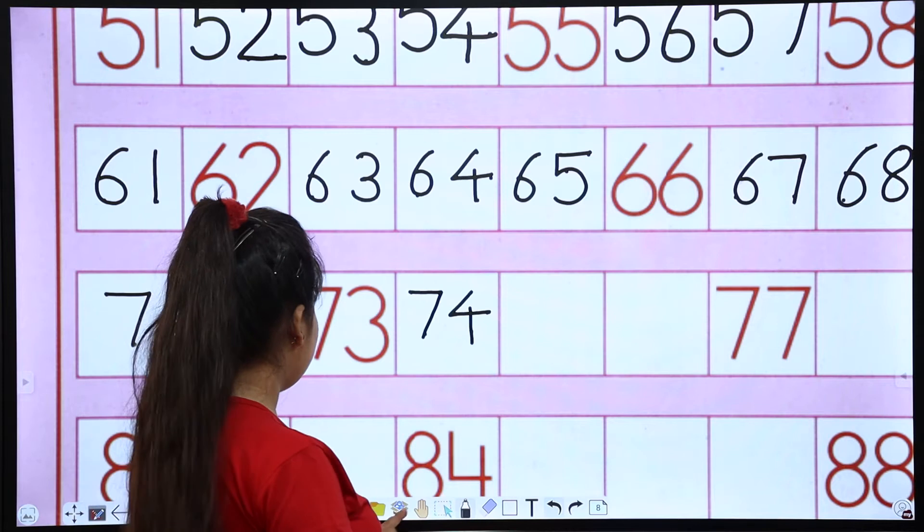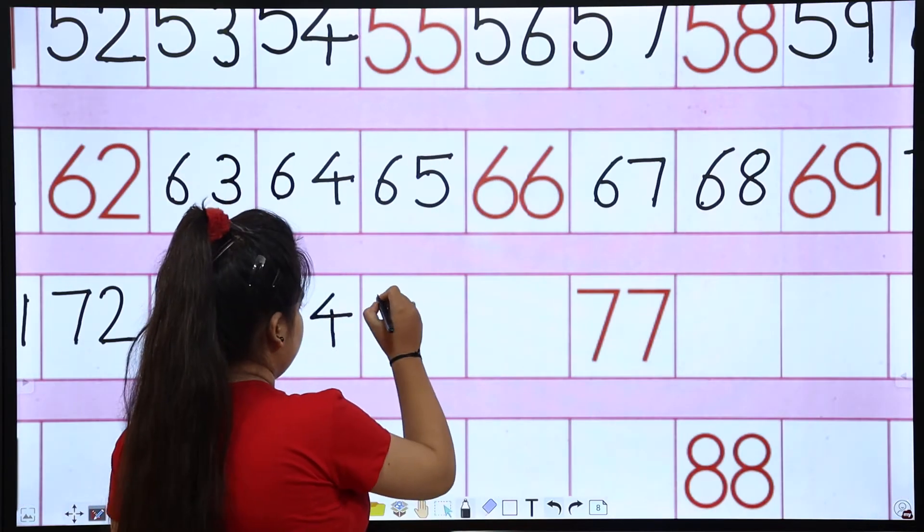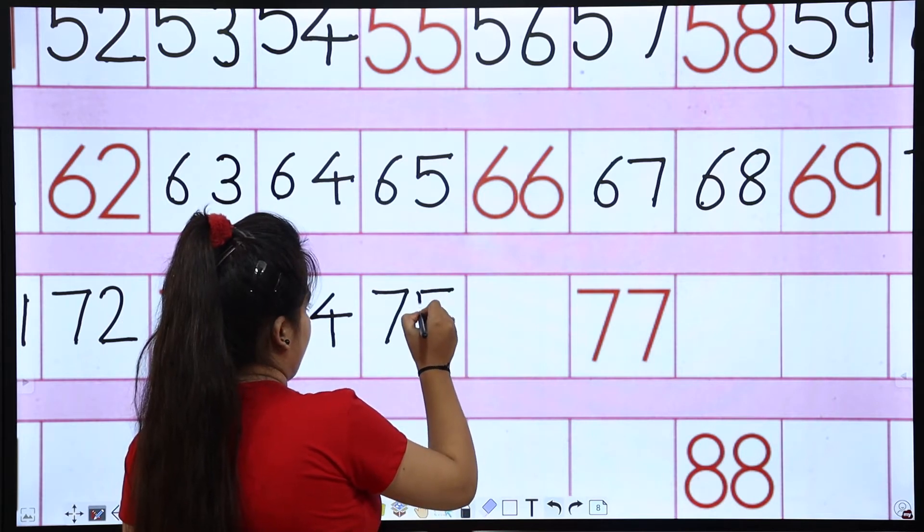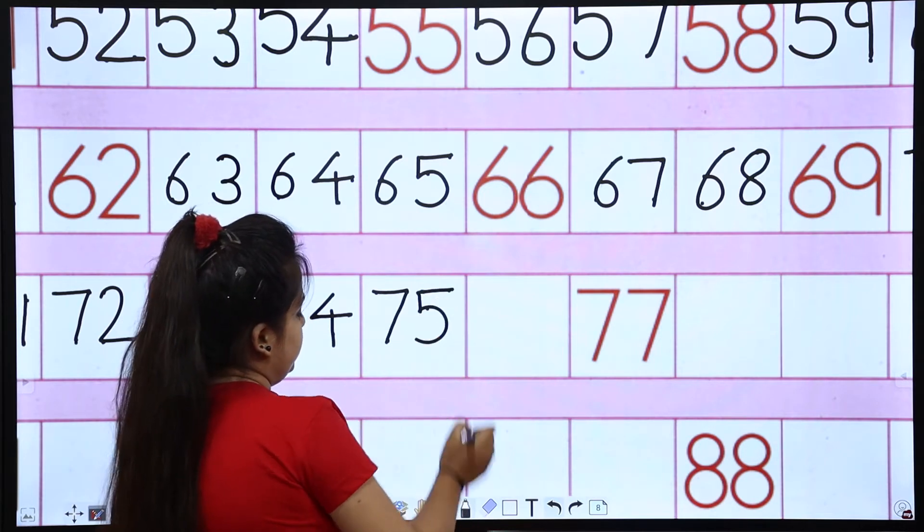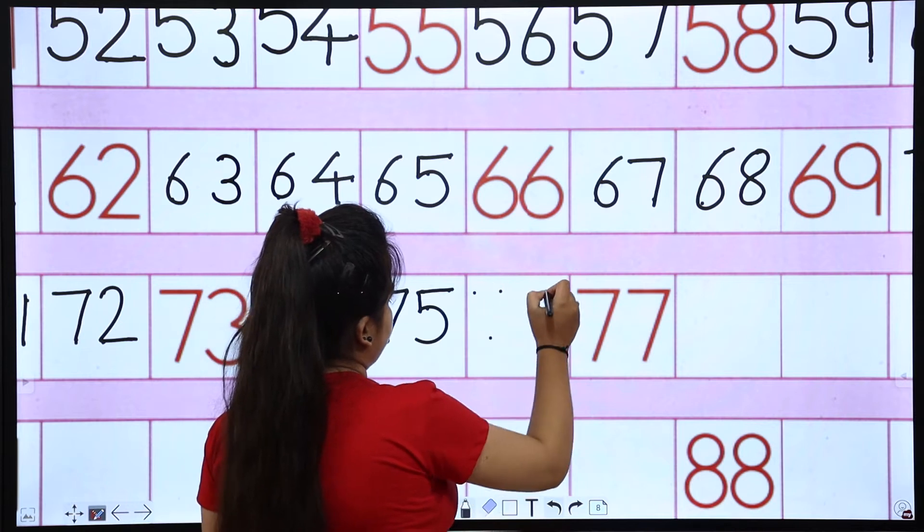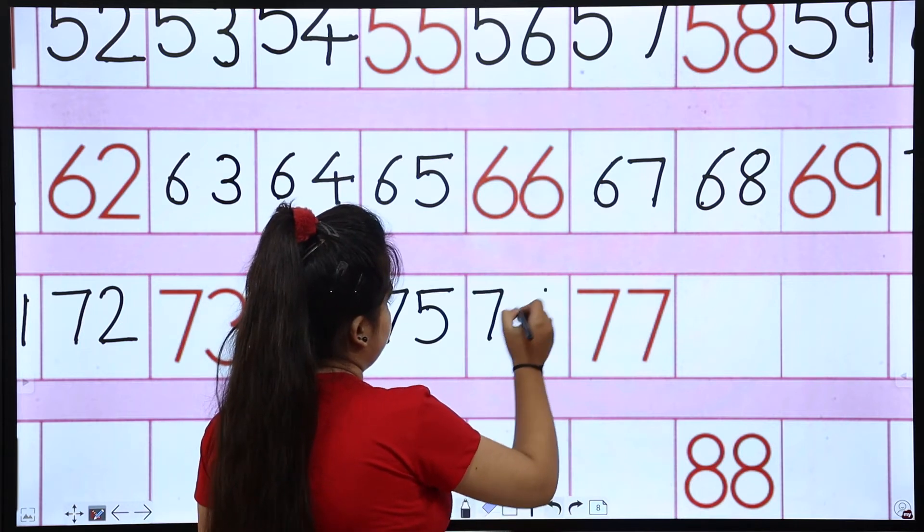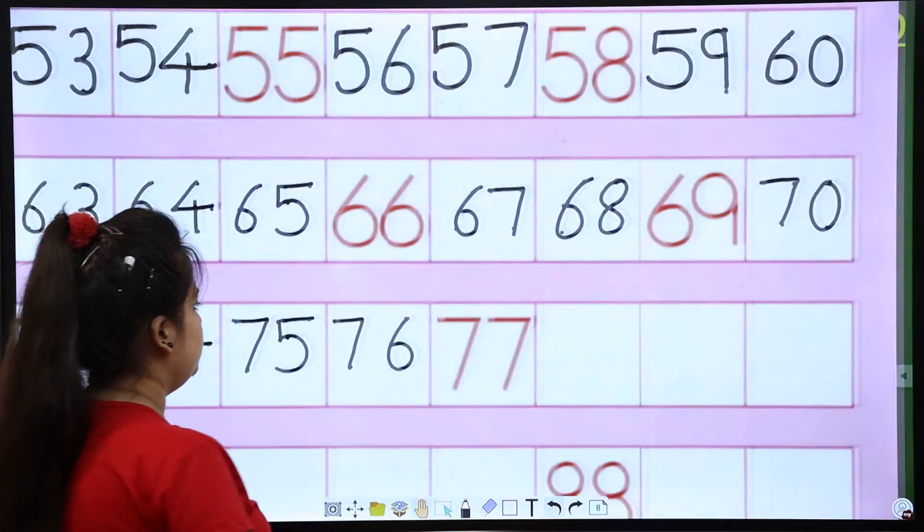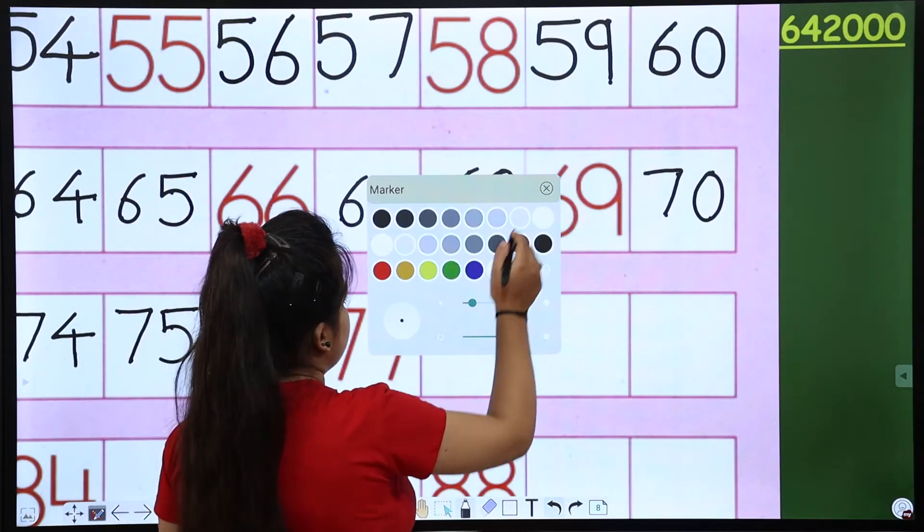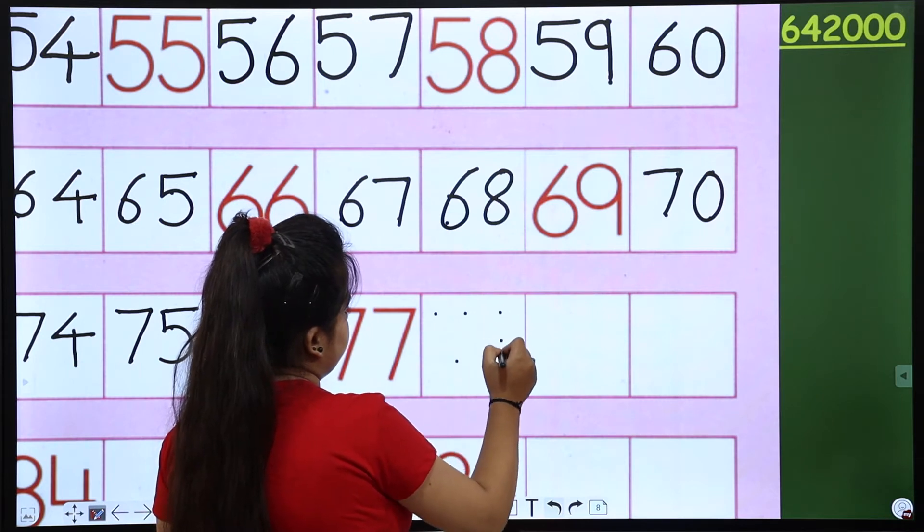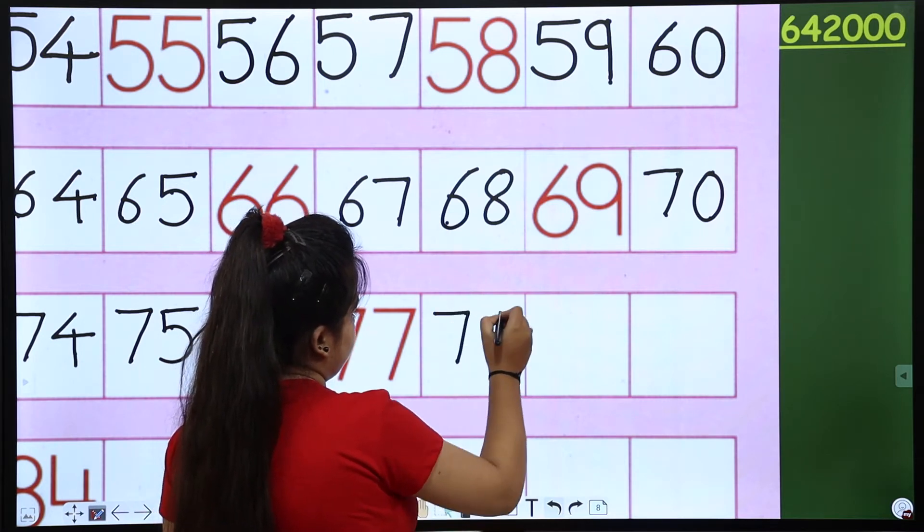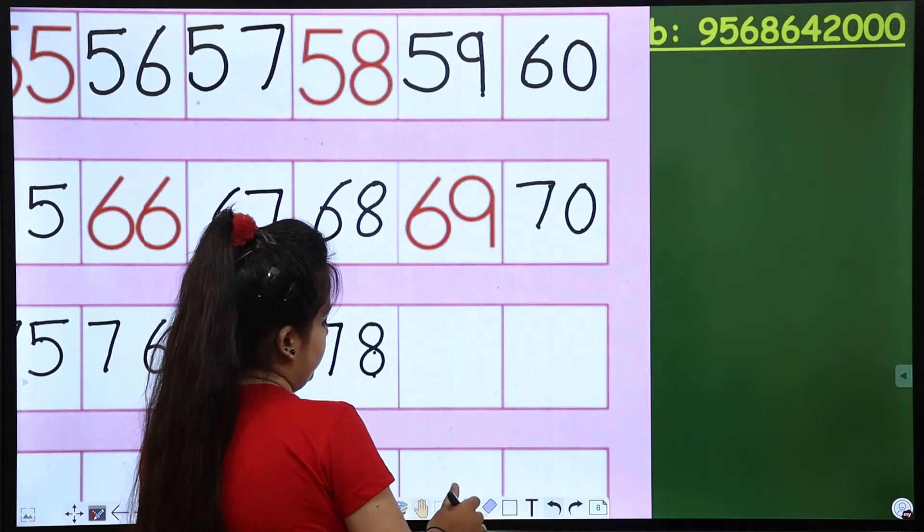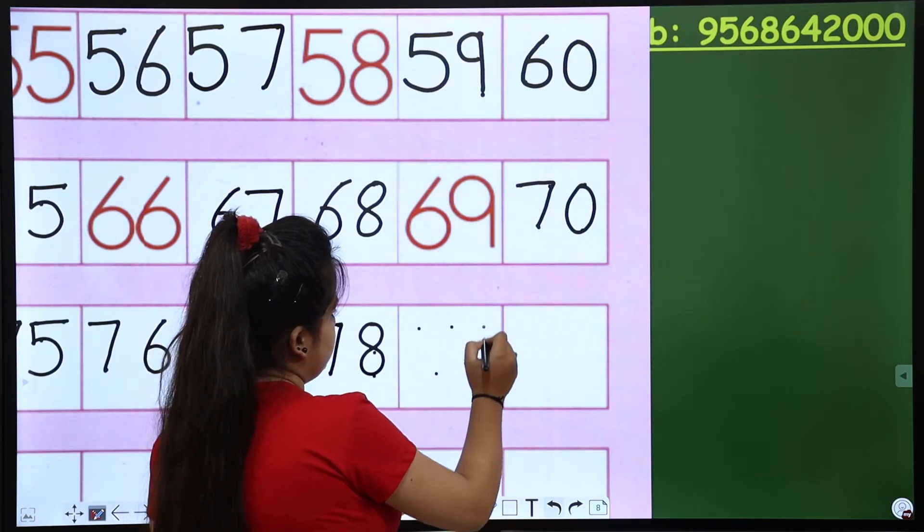75, 75. Then 76, 76. 77, 77 is there. The next number 78, 78. Okay, next 79, 79.